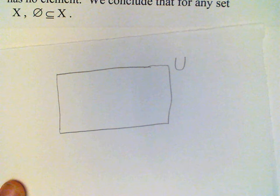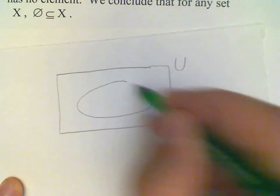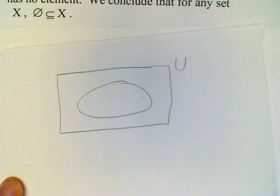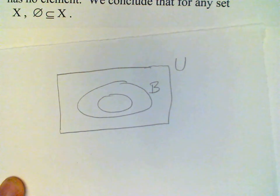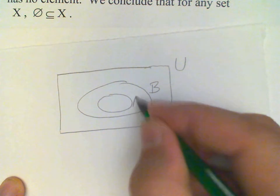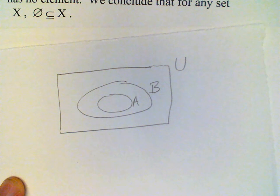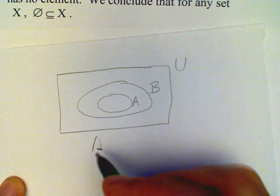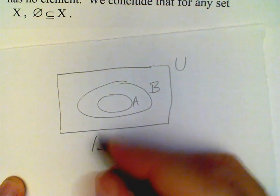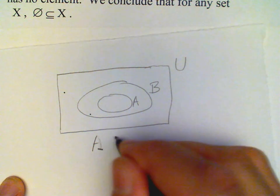and then to represent subsets of the universal set we draw circles or ovals inside the rectangle. So let's say we have this oval here representing the set B, and then inside B we have A. And we can write that this Venn diagram represents that A is a subset of B.